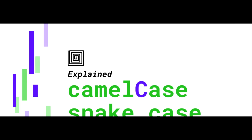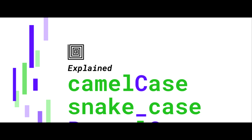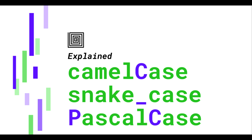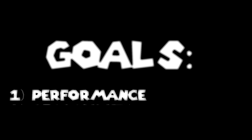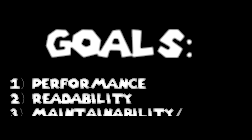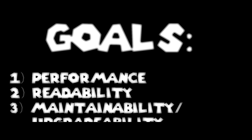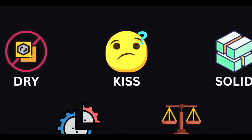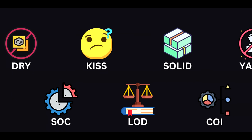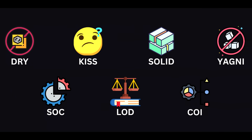Programmers have a lot of guidelines to determine what makes good code. The goal here is pretty simple: we want code to be performant, we want it to be readable, and we want it to be easy to upgrade. To achieve those three qualities, programmers have built a lot of principles for how to write code.